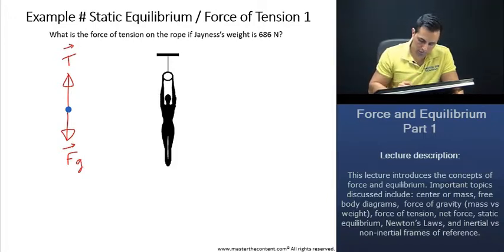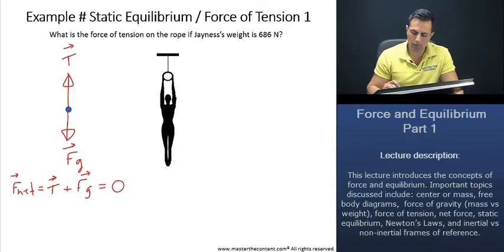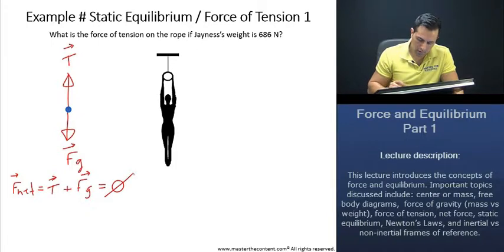Thus, because we have two vertical forces here, our force net is just going to be the tension plus force of gravity. And again, we said for balanced forces, that's going to be 0.